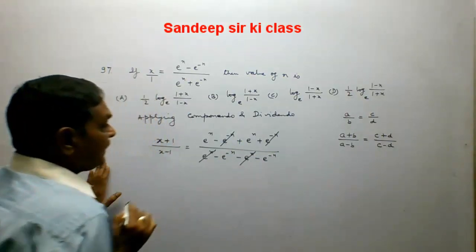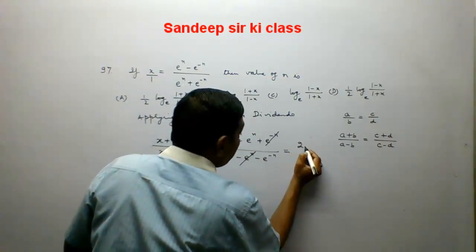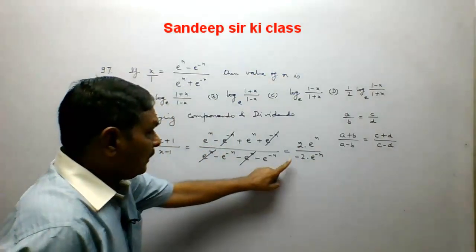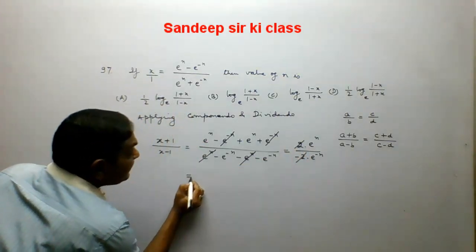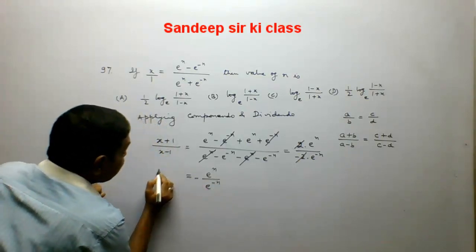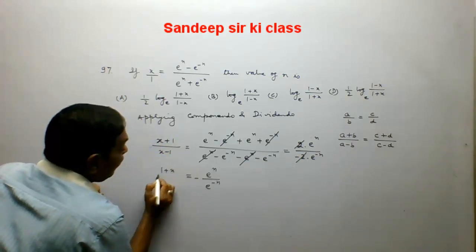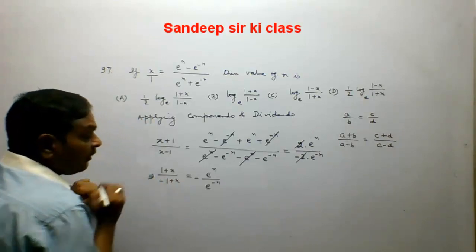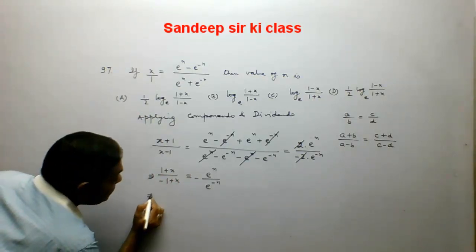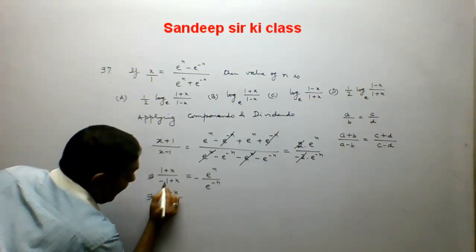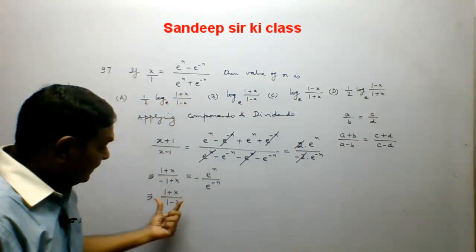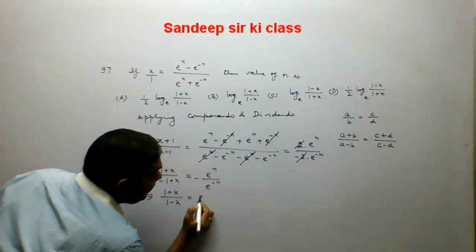Simplifying: the numerator becomes 2 times e to the power n, and the denominator becomes 2 times e to the power minus n. Cancelling the 2s, we get e to the power n upon e to the power minus n. This equals e to the power 2n. So (1 plus x) upon (1 minus x) — after adjusting for the negative sign in the denominator — equals e to the power 2n.